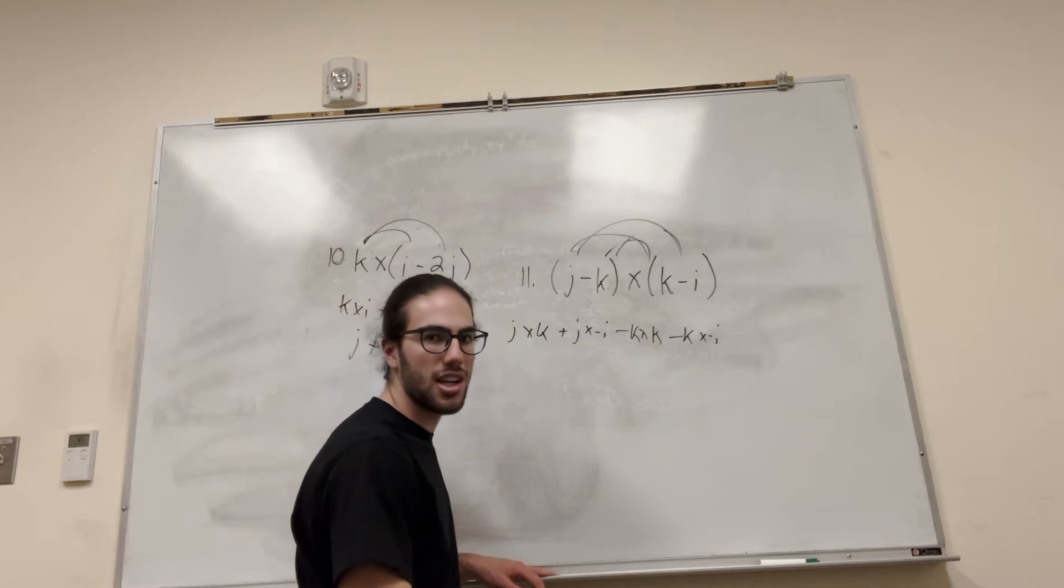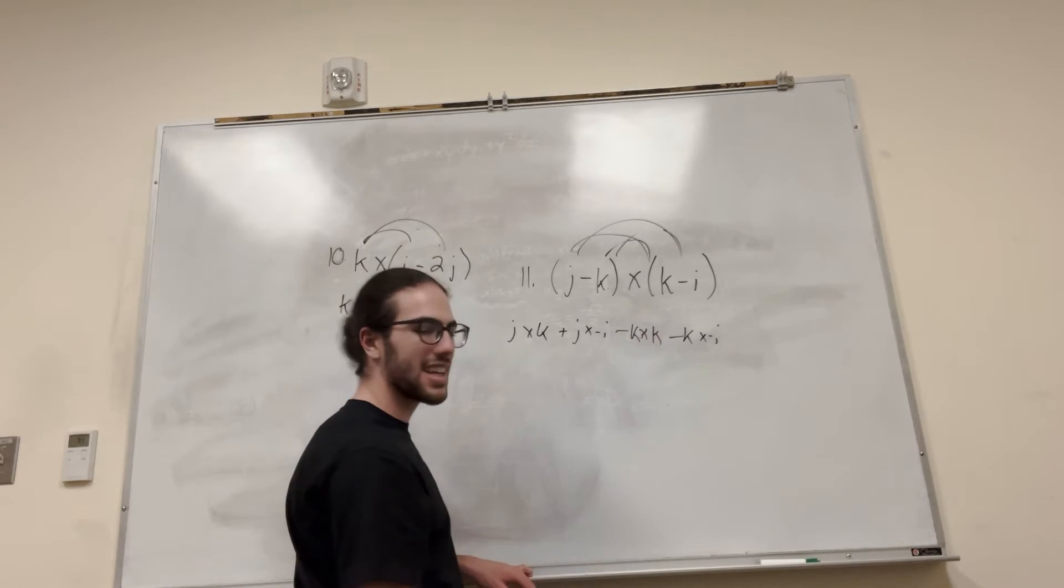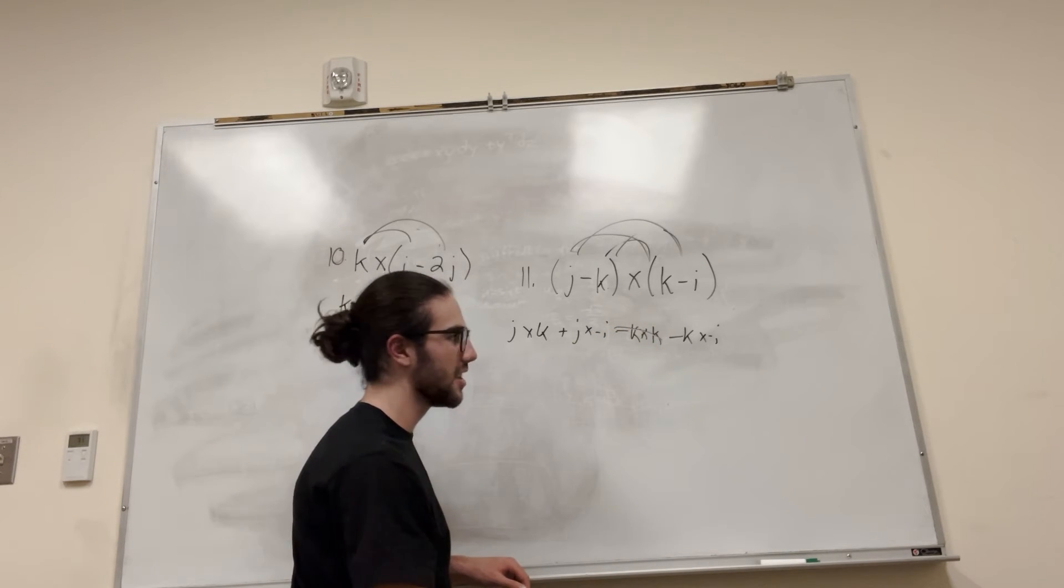Alright, so first we look at this, and we know that when cross products are parallel, that it's going to be equal to zero. So obviously k and negative k, zero, boom, they're orthogonal, or they're parallel, they're going to be zero.